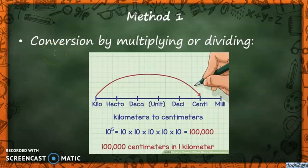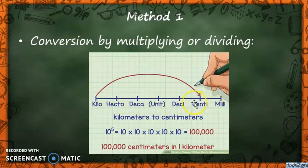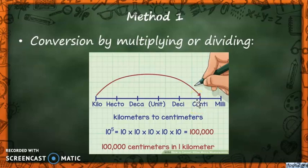We are converting from kilometer to centimeter. Here we have our metric line, and as we move along it, we move by powers of 10. Each time we move to reach centi, we move by a power of 10. Since we are moving from a larger unit to a smaller unit, we know that we should multiply.